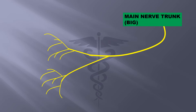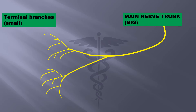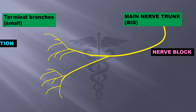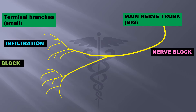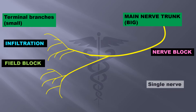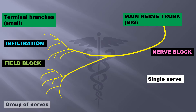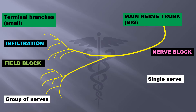This is the main nerve trunk, which is big. There are these small terminal branches. Here, nerve block is given; here, infiltration and field block — for a single nerve or group of nerves.